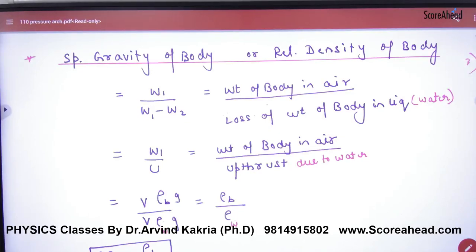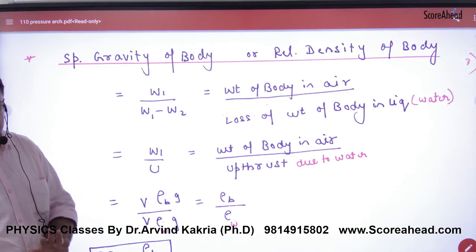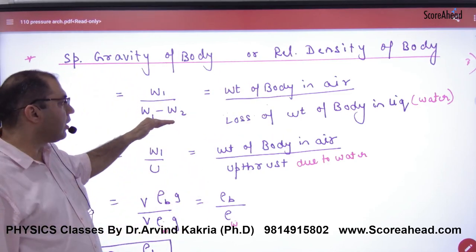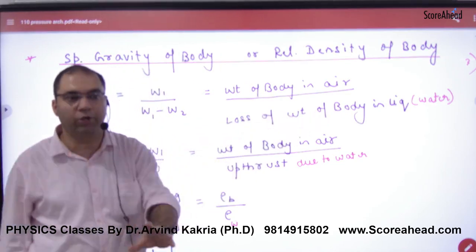The basic definition of specific gravity or relative density is weight of the body in air divided by loss in weight of the body in liquid.